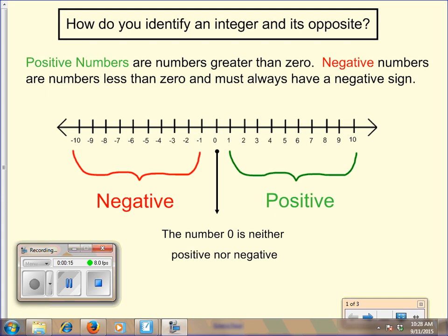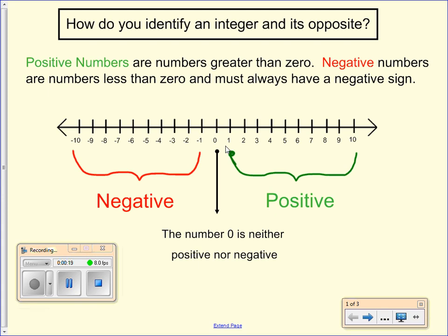Positive numbers are numbers that are greater than zero. Negative numbers are numbers that are less than zero, or on a number line are to the left of zero. And they must always have a negative sign next to them to indicate that they are a negative number.